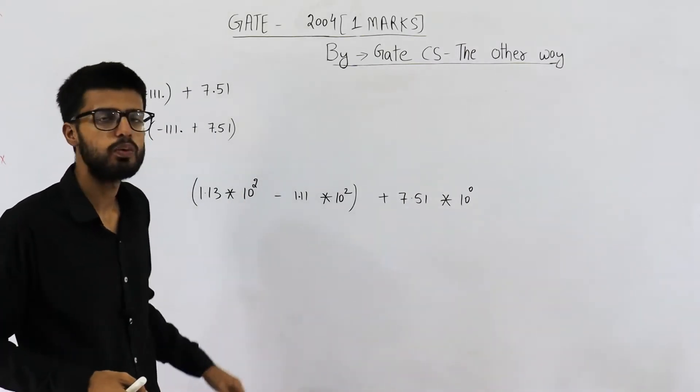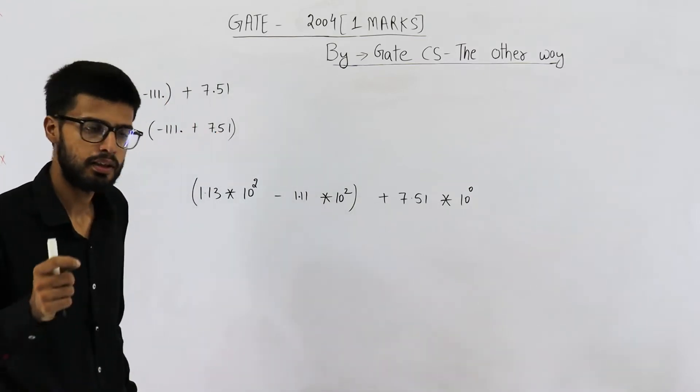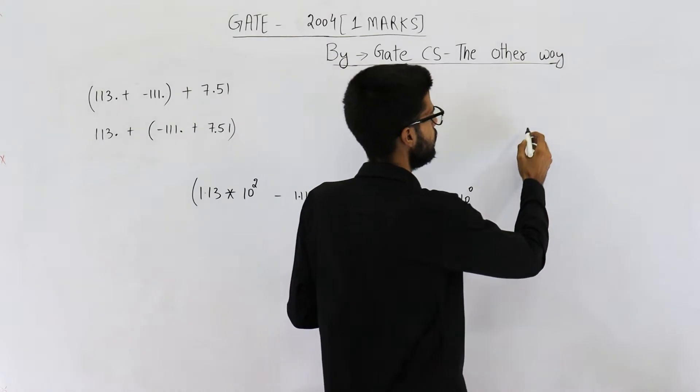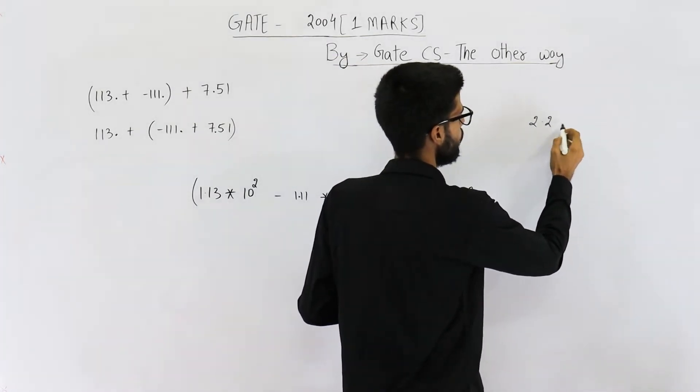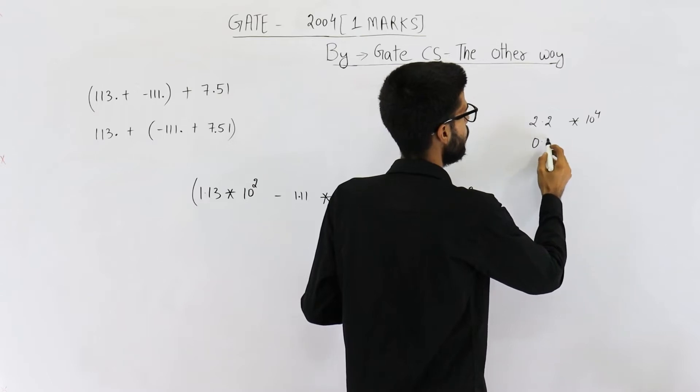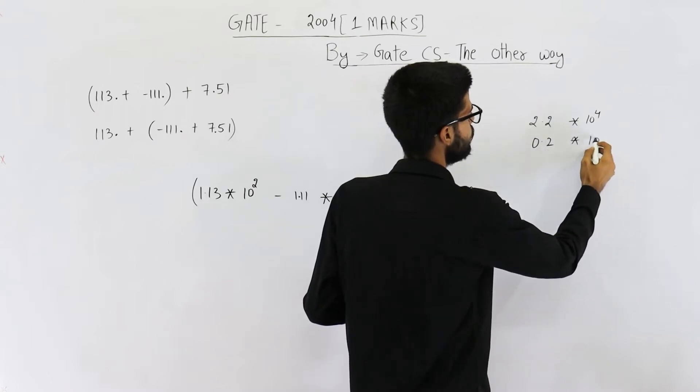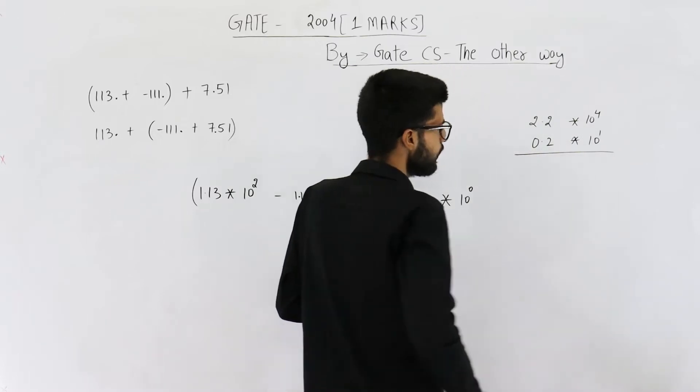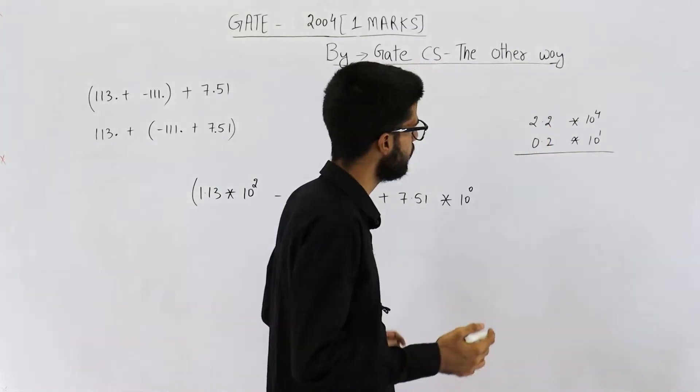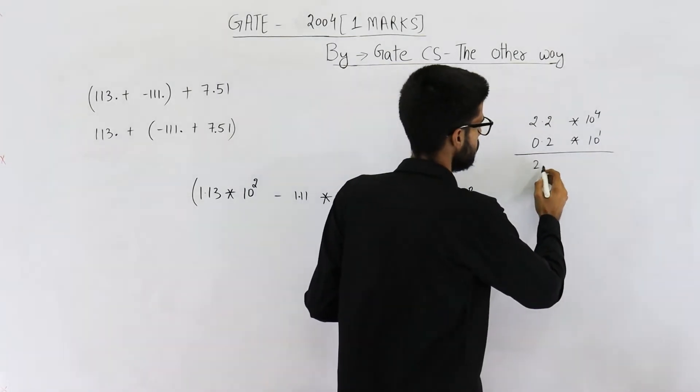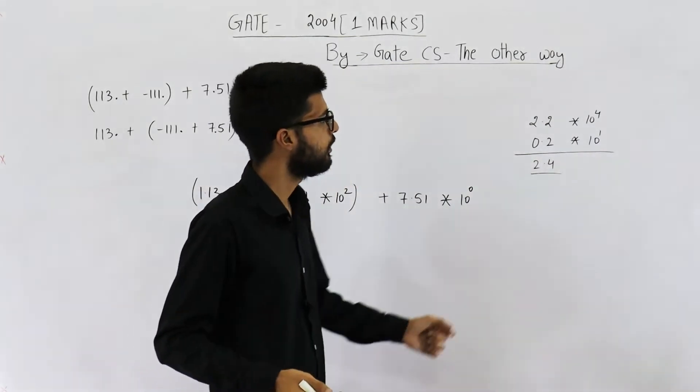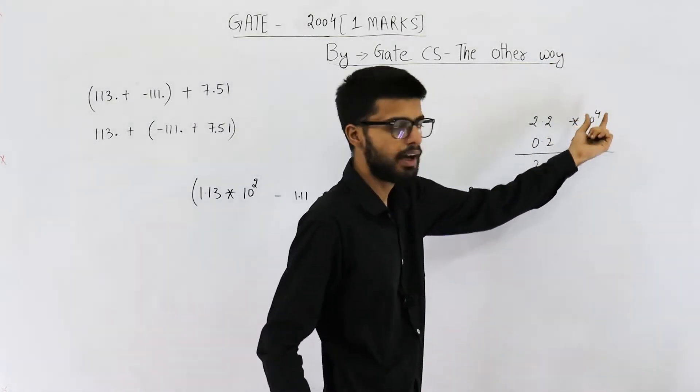After this, we will perform the addition or these calculations. But you need to know one point. Suppose you need to add 2.2 × 10⁴ and 0.2 × 10¹. Can I simply add these two numbers and say answer is 2.4? No. Because this is incorrect. We need to consider these exponents also.